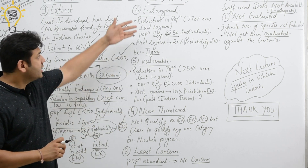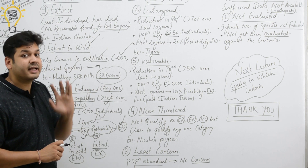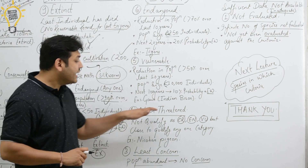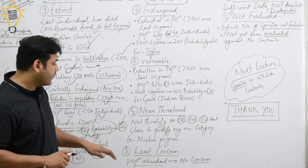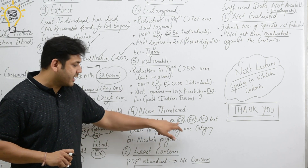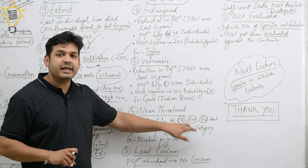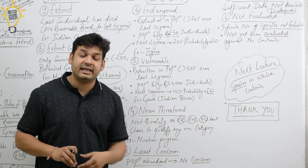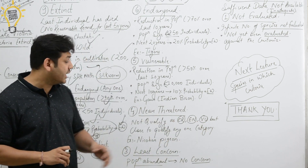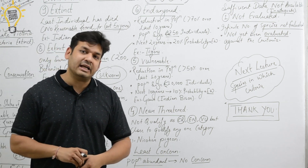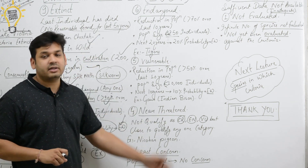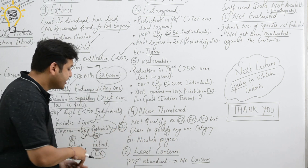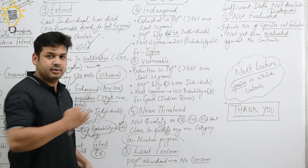Next is Near Threatened. Near Threatened means the species does not qualify as Critically Endangered, Endangered, or Vulnerable — but it is close to qualifying for any one of those categories. Such species are called Near Threatened. Example: the Nicobar Pigeon is an example of a Near Threatened species.